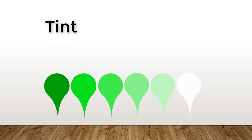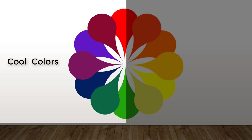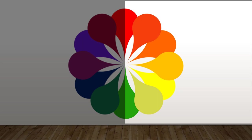Here you can see the temperature of colors. Purples, blues, and greens are considered cool colors, while reds, oranges, and yellows are thought to be warm colors.